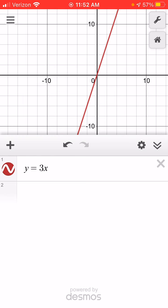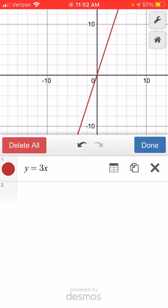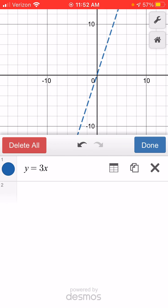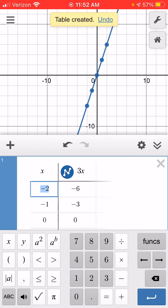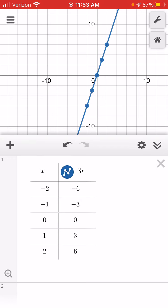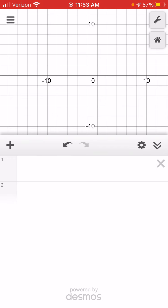There's the settings sprocket here, where I can go in and I can actually then change my lines, change the color, change if it's dashed or dotted. So there's lots of different things. I can also hit the table button, which shows me a table of values. I can come in and I can switch to some different settings there.